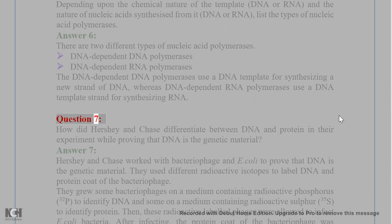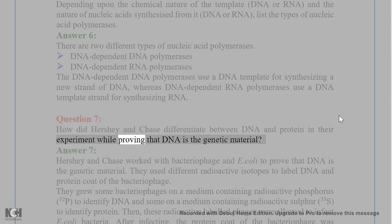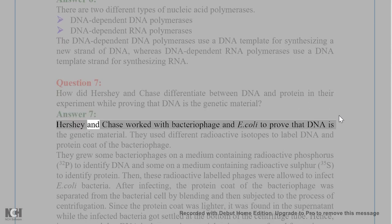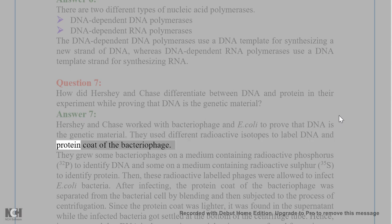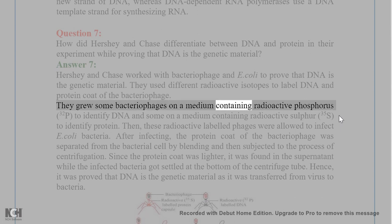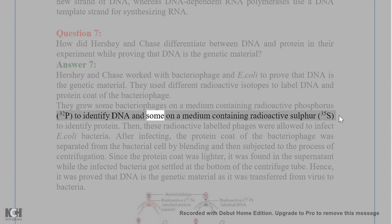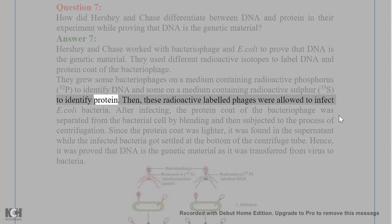Question 7. How did Hershey and Chase differentiate between DNA and protein in their experiment while proving that DNA is the genetic material? Answer 7. Hershey and Chase worked with bacteriophage and E. coli to prove that DNA is the genetic material. They used different radioactive isotopes to label DNA and protein coat of the bacteriophage — radioactive phosphorus (32P) to identify DNA and radioactive sulfur (35S) to identify protein.